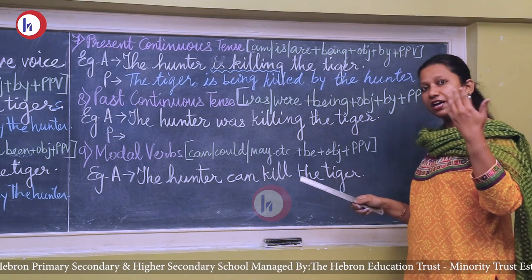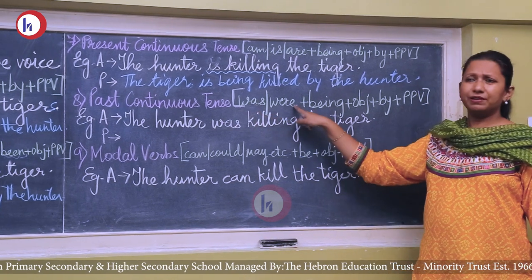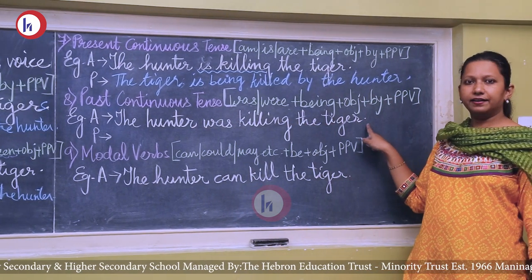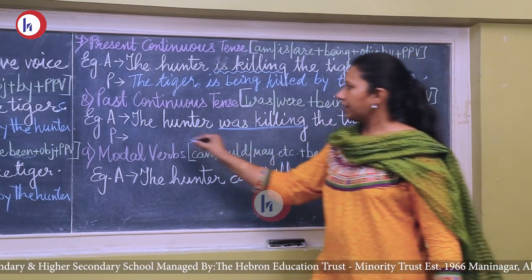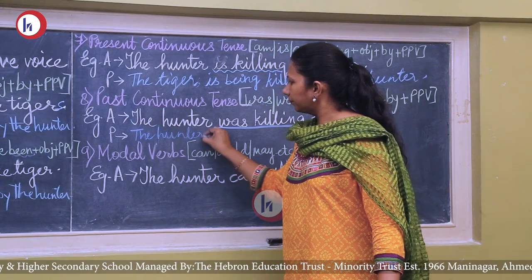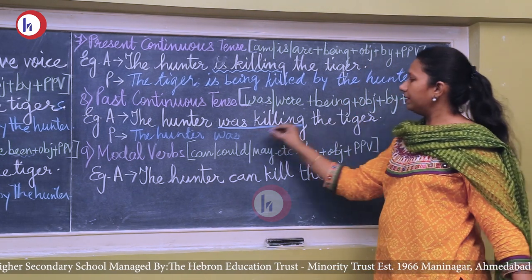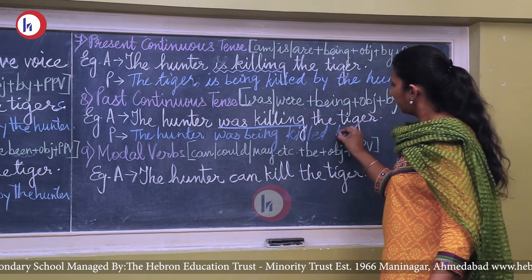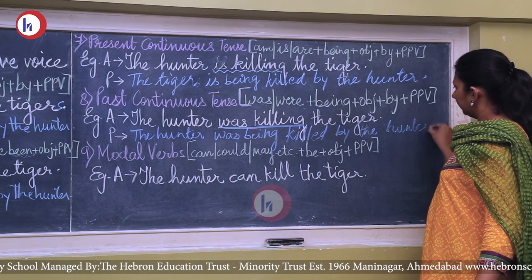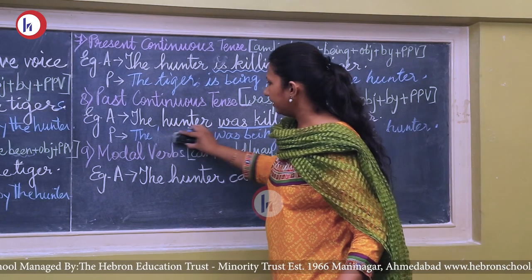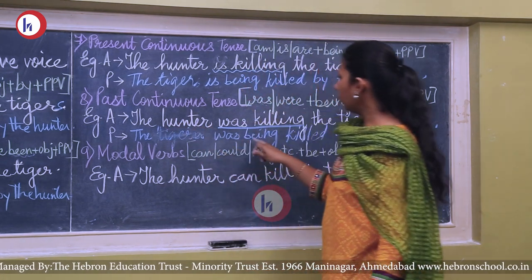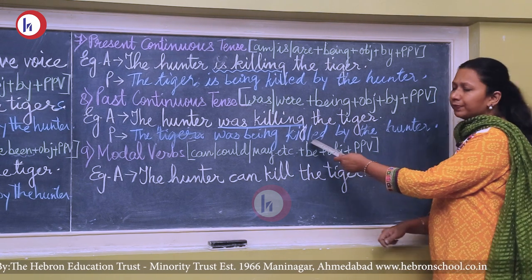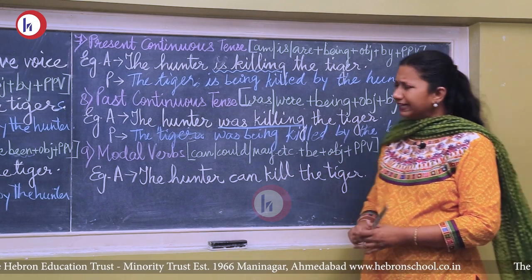For past continuous tense, the helping verbs are 'was' and 'were', and again 'being' is added for continuous tense. Example: 'The hunter was killing the tiger.' The verb is 'was killing'. The passive voice is: 'The tiger was being killed by the hunter.' The verb 'was killing' changes to 'was being killed' — 'was' remains the same, 'killing' changes to past participle 'killed', and 'being' is added.